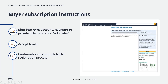First, the buyer needs to sign into the AWS account they want to use to subscribe to the renewed or upgraded AMI or SaaS private offer, which they can do in one of two ways. They can either open the private offer URL that was sent by the seller, or navigate to the AWS Marketplace product page for the product they are subscribing to. Then, they'll select the private offer from the drop-down menu titled Offer Name.